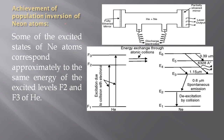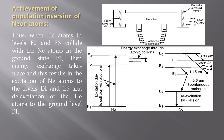Achievement of population inversion of Neon atoms: some of the excited states of Neon atoms correspond approximately to the same energy as the excited levels F2 and F3 of Helium. Corresponding to the F2 level there is the E4 state of Neon, and corresponding to the F3 level there is the E6 state of Neon. This is one of the reasons that a mixture of Helium and Neon is taken. Thus, when Helium atoms in levels F2 and F3 collide with Neon atoms in the ground state E1...